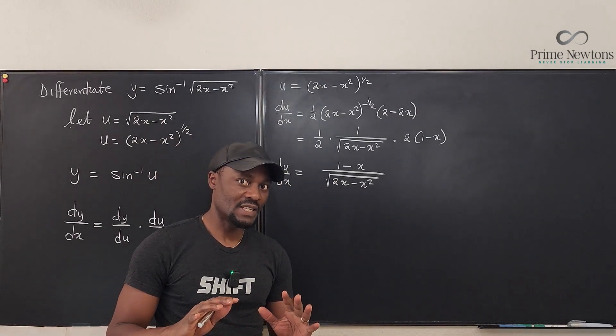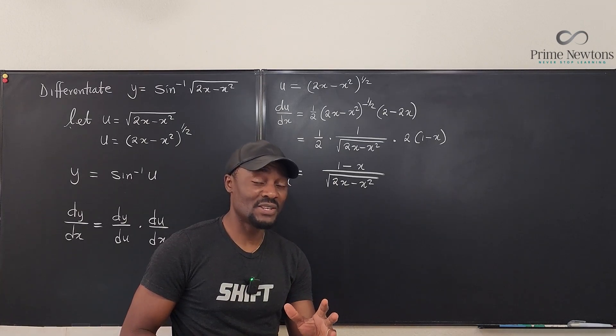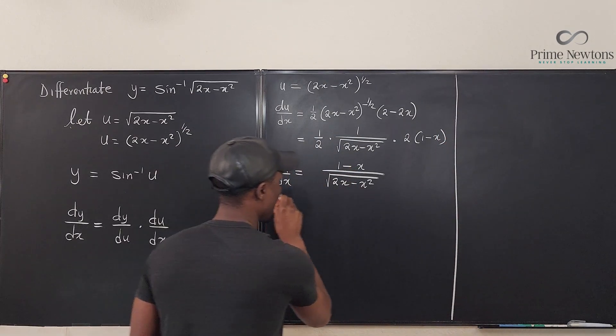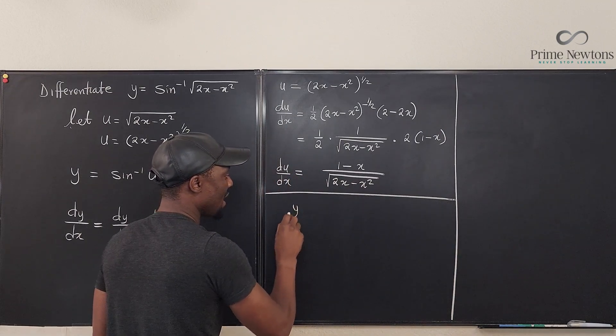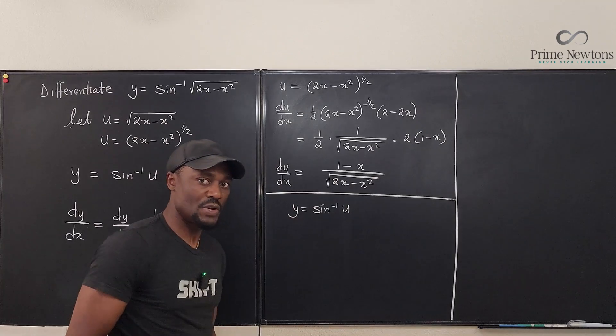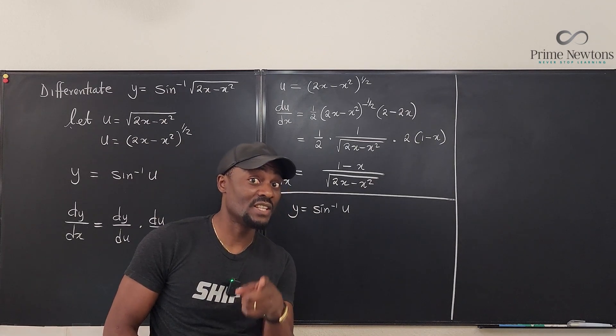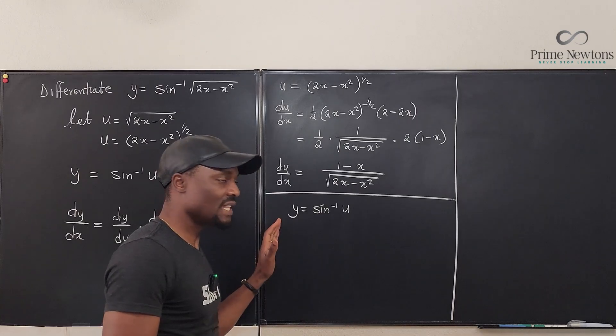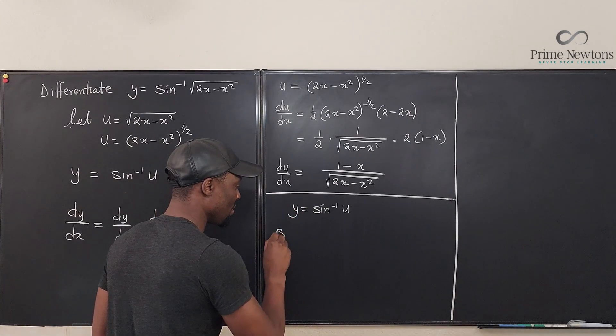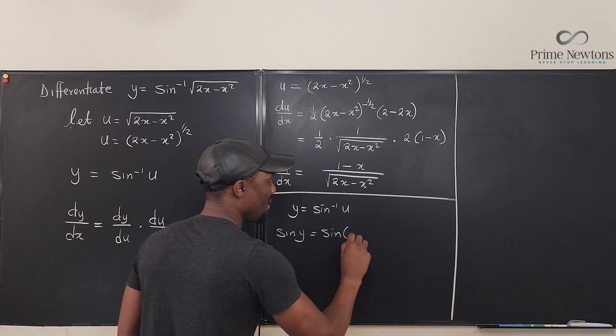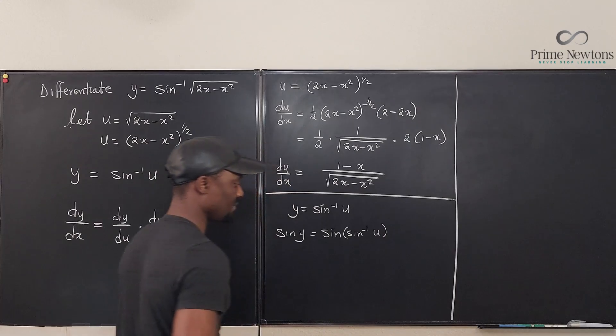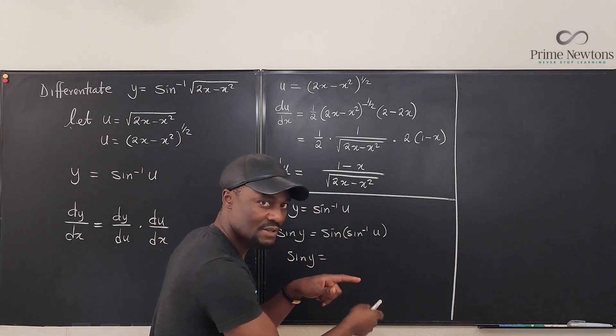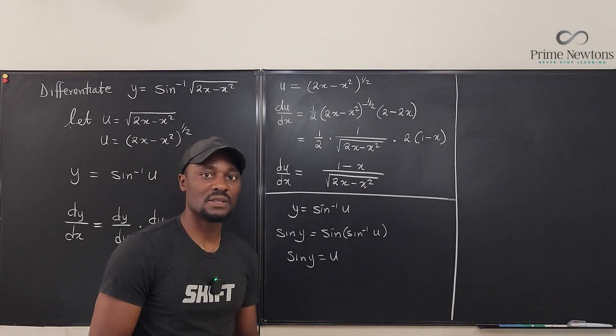So now we need to find dy/du, which is where our implicit differentiation comes in. So let's see. So we know that y is arcsine of u, but we don't know how to differentiate arcsine, but we know how to differentiate sine, right? So what I'm going to do is I'm going to convert this into a sine function by taking the sine of both sides. So watch this. I'm going to say sine y is equal to sine of arcsine u. Sine y is equal to the sine of the inverse of sine is just u. So sine y is equal to u.